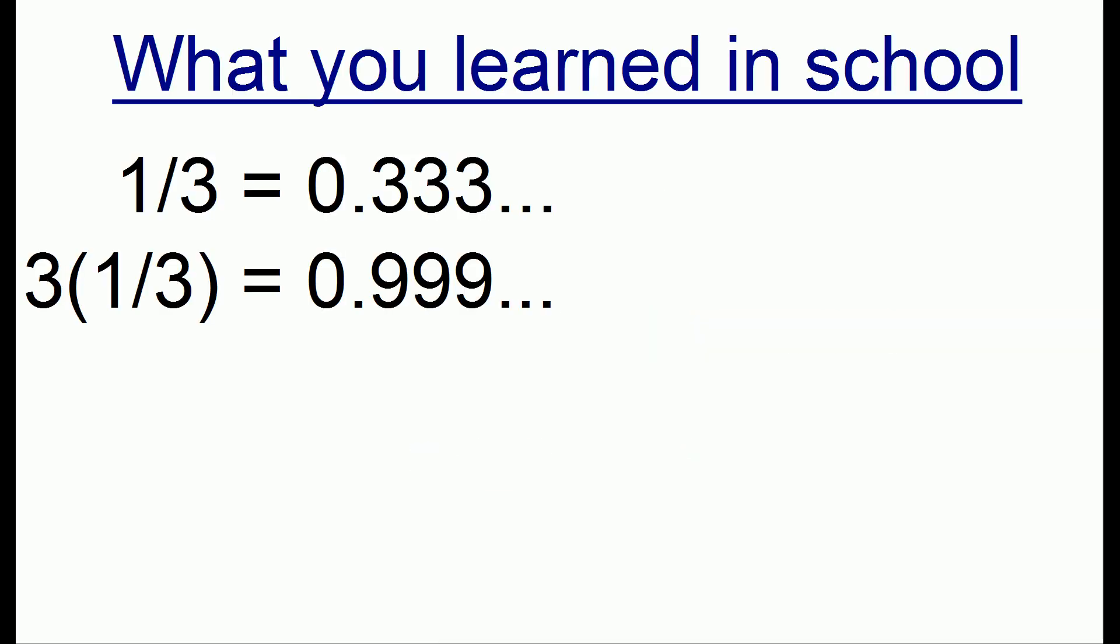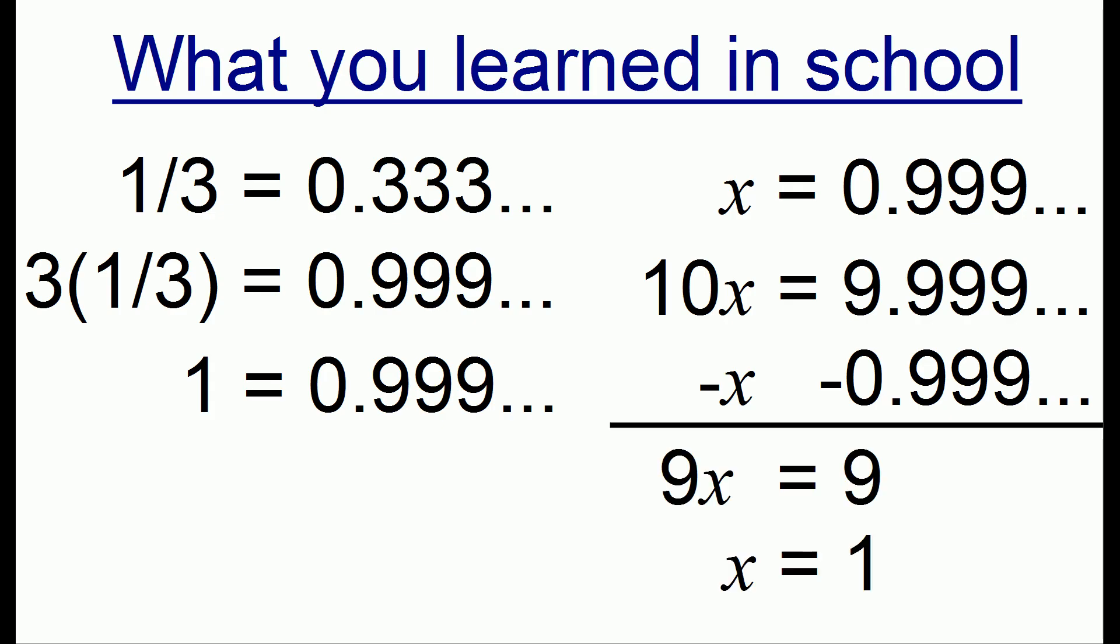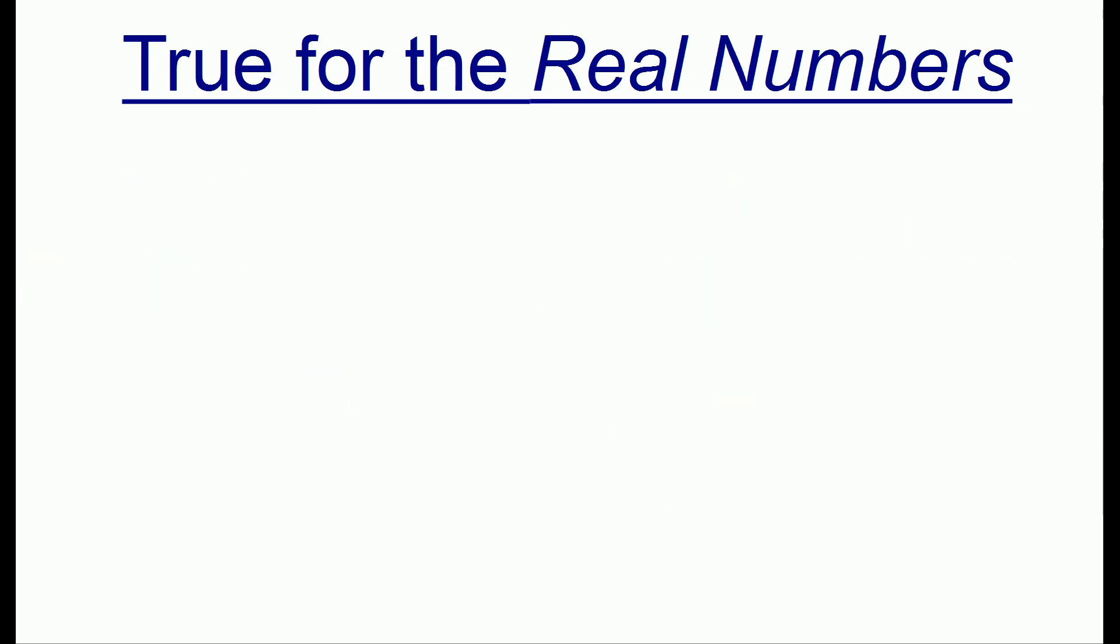Now you've probably heard that 0.9 repeating is equal to 1 and you've probably seen some very convincing proofs of it. And what you've learned in school is actually true. It's true for the numbers we commonly use called the real numbers.